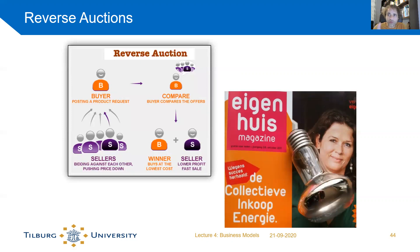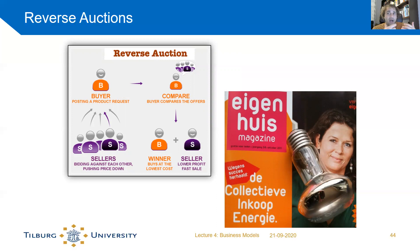A reverse auction is an interesting alternative business model where you really switch around who is the customer. An example is collective energy, where a couple of thousand consumers form a platform or community and go to utility companies saying: we are two thousand households needing this amount of electricity and gas per year — what is the cheapest price you can offer us? They then approach different companies and pick the cheapest or best offer. That's why it's called a reverse auction.